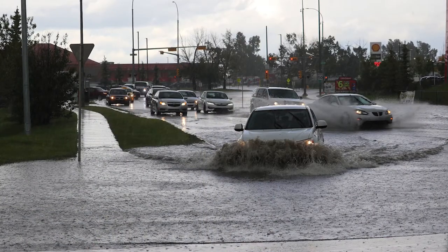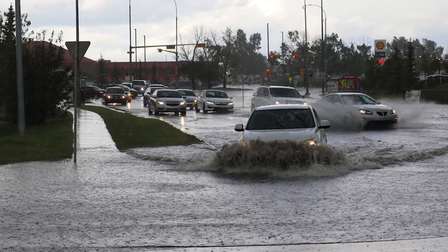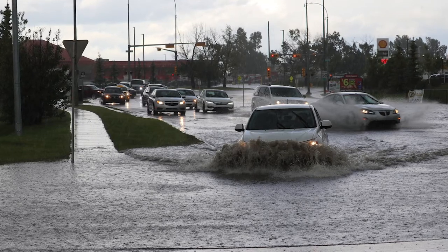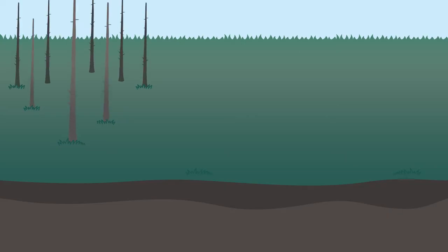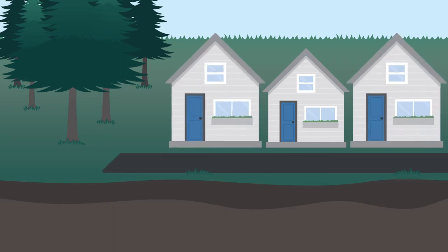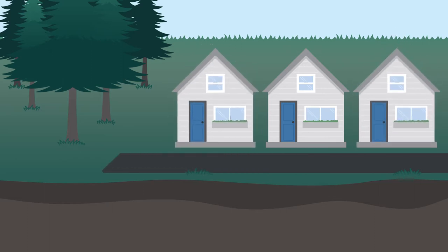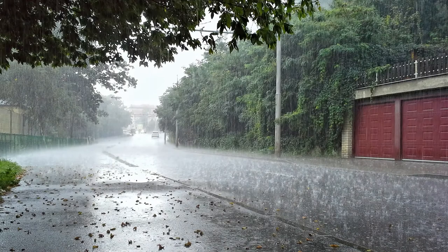Extreme flooding situations happen because of too much impermeable surface cover in an area. These impermeable surfaces are most common in urban and suburban areas. As a result, runoff is a common problem here. This graphic shows the difference between a natural landscape and an urbanized area. As you increase the number of paved roads and buildings, you decrease the vegetation and therefore decrease the amount of water absorbed into the ground. Water absorbing into the ground is called infiltration and it is much lower in urbanized areas.